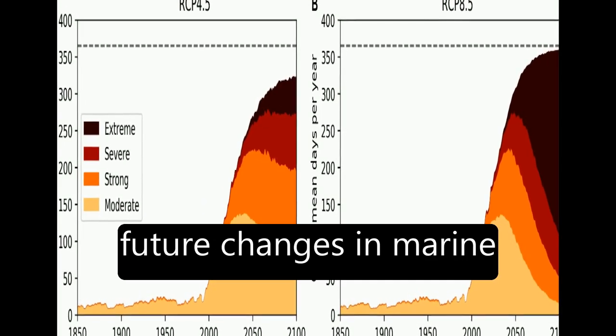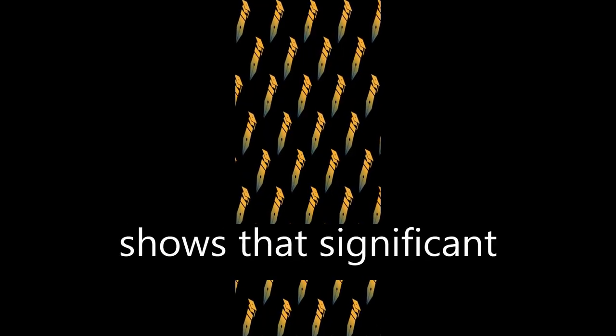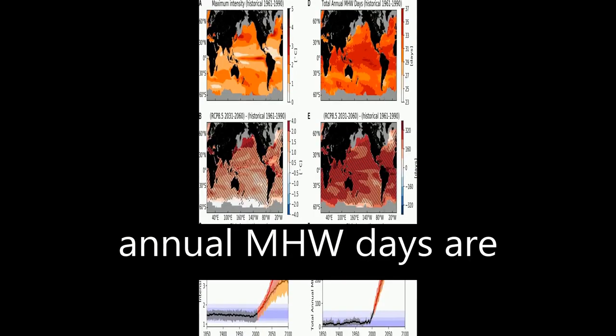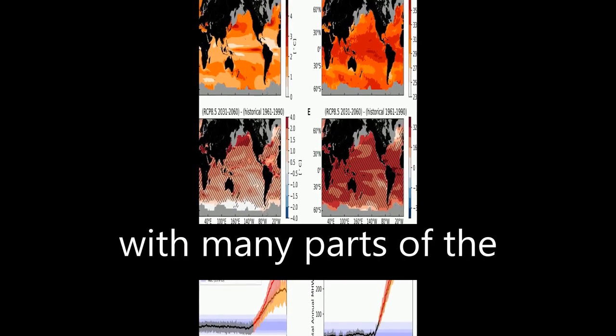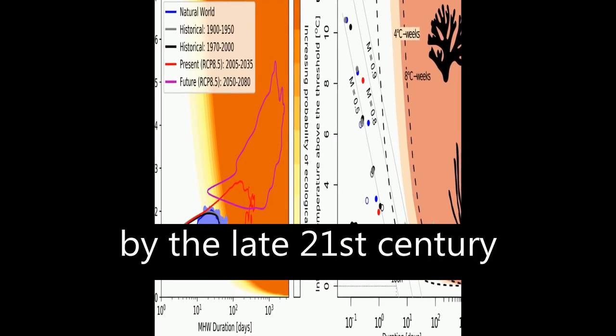The study estimates future changes in marine heat waves, MHWs, using CMIP-5 global climate model projections and shows that significant increases in MHW intensity and count of annual MHW days are projected to accelerate.